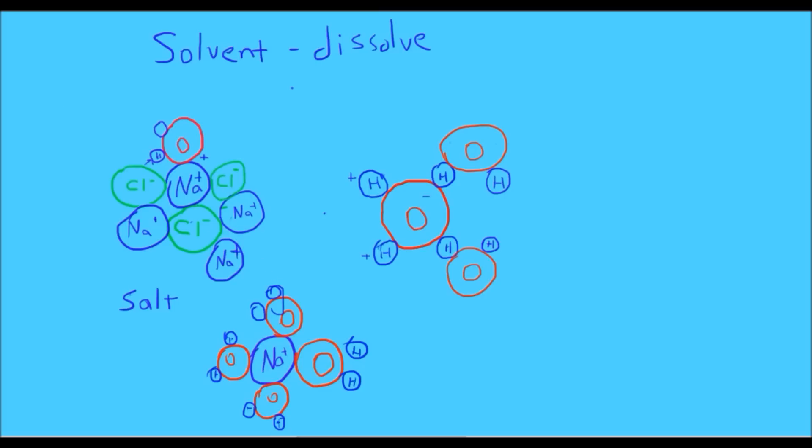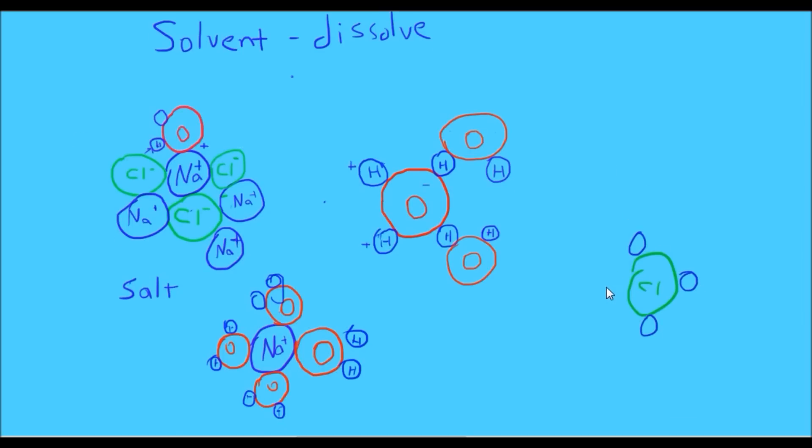Now what happens to the chloride? You probably already know this, but I'll draw it just to make sure. Likewise, the chloride ions are going to be pulled by the positive charge that's inherent in the hydrogen atoms of water molecules. So again, the chloride gets surrounded by water molecules. And in each one, the hydrogen with its weak positive charge is attracted to the chloride with its weak negative charge.